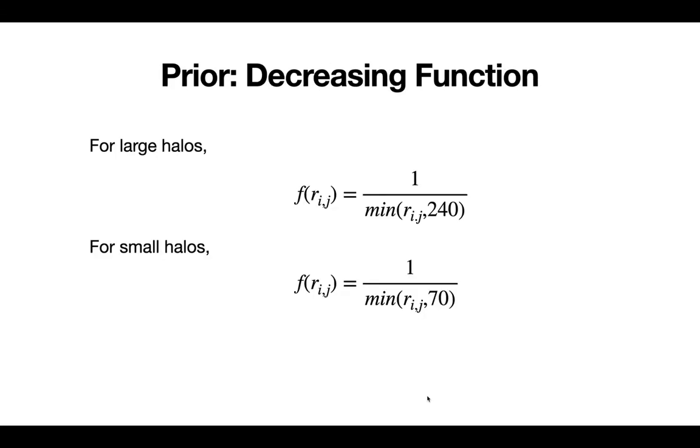So this decreasing function for large halos will just be 1 over the minimum of the Euclidean distance and 240. And for small halos, we'll have 1 over the minimum of this Euclidean distance and 70.